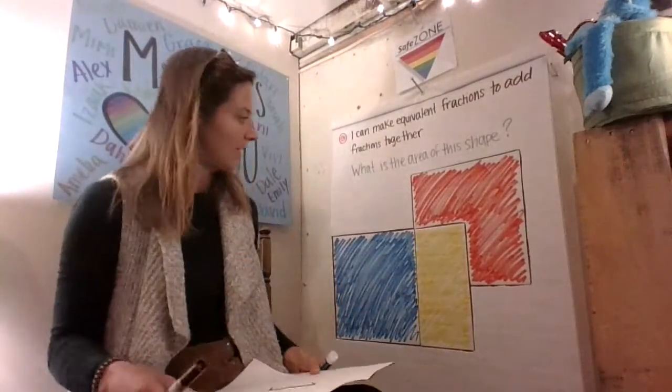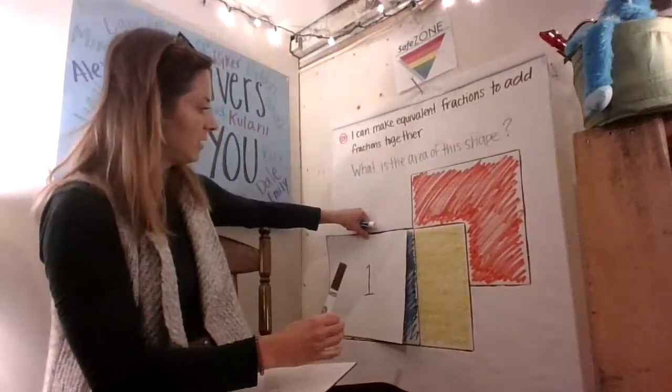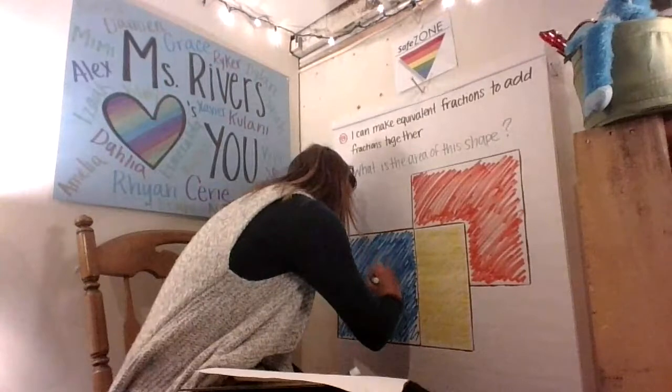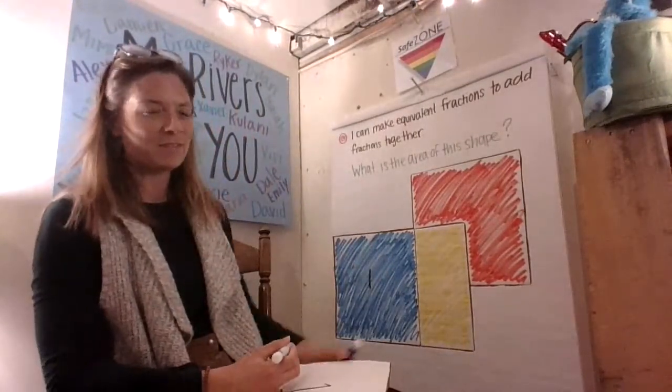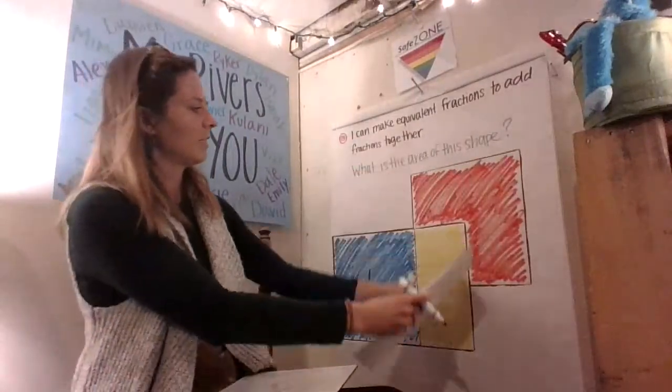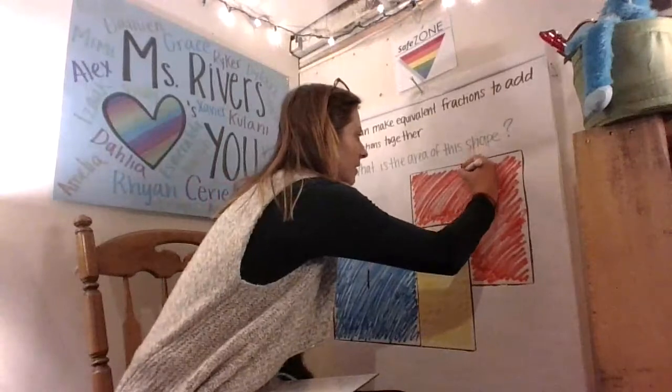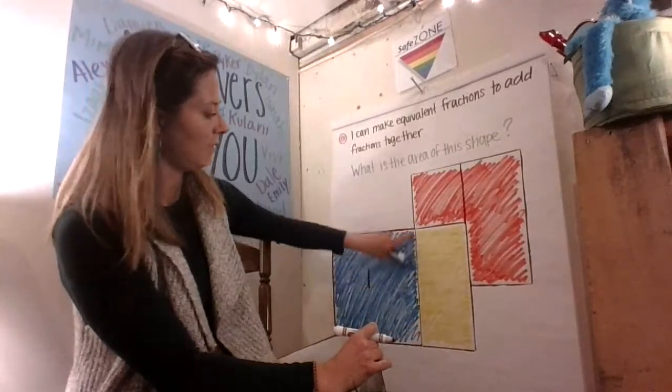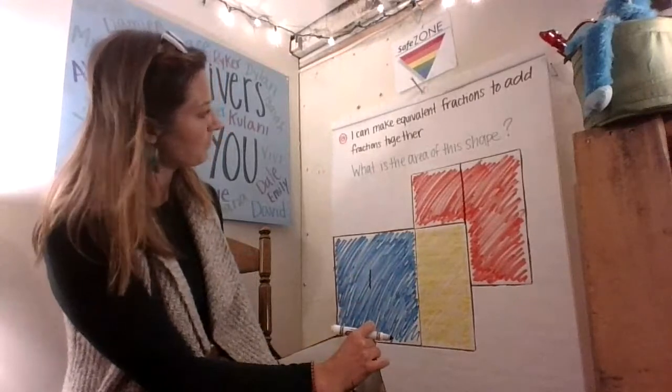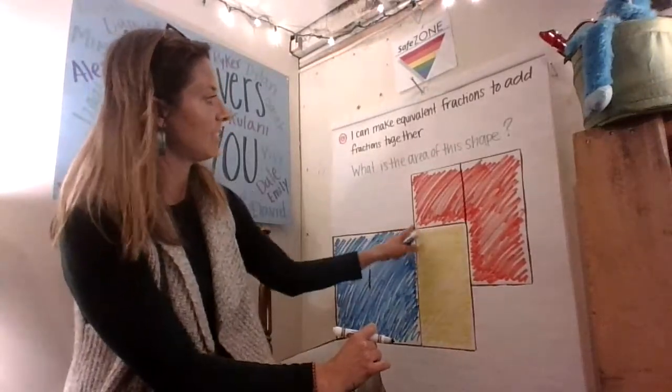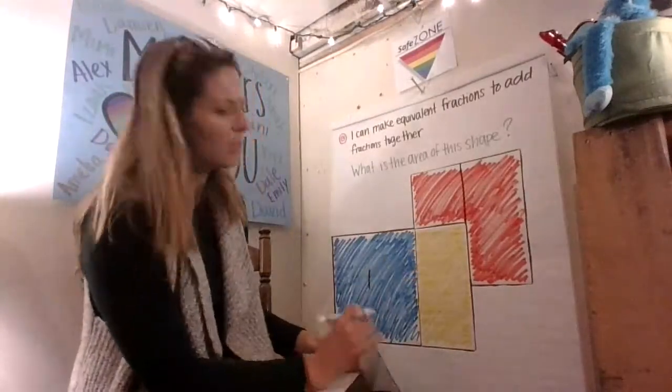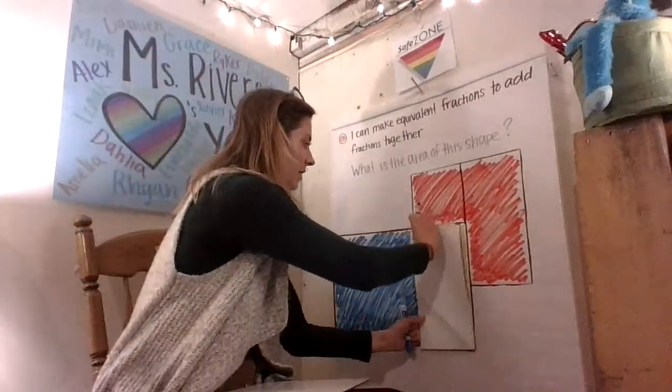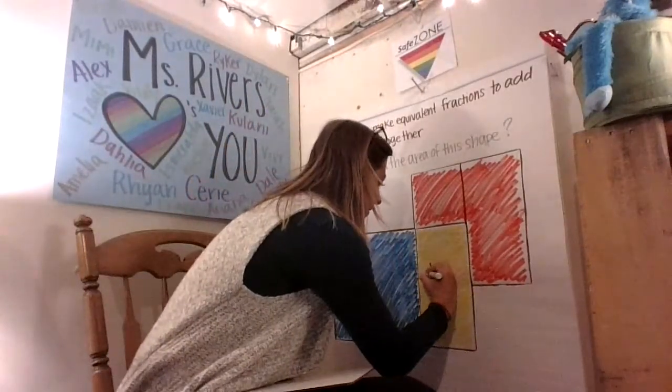Well, I can see that the blue is one, so I'm going to write down one. But the other ones aren't the whole shape. So I'm going to draw a line here. That makes me see that this shape is the same length as this square and the width is the same as half of this square. So I noticed that the yellow is equal to one half.